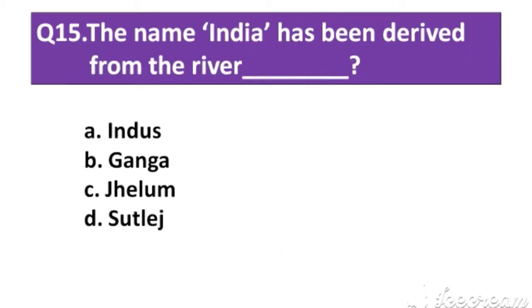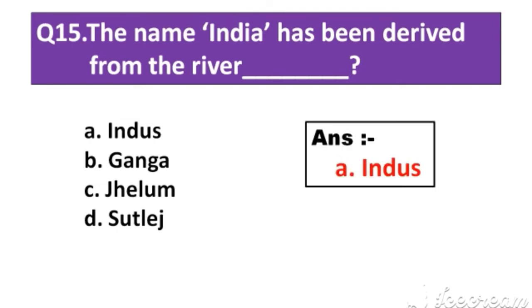Question number 15: The name India has been derived from which river? Option A: Indus. Option B: Ganga. Option C: Jhelum. Option D: Sutlej. The right answer is Option A: Indus.